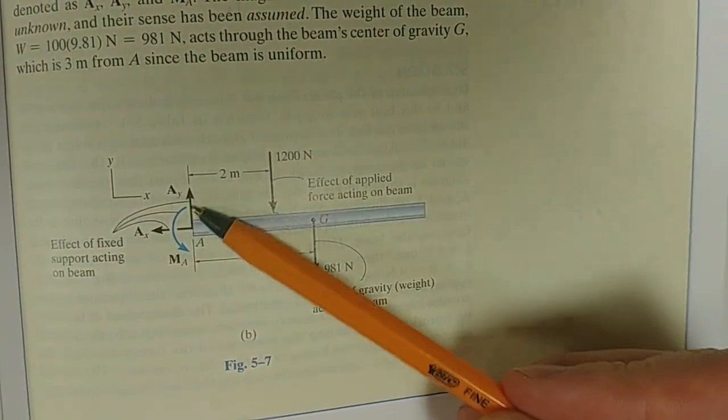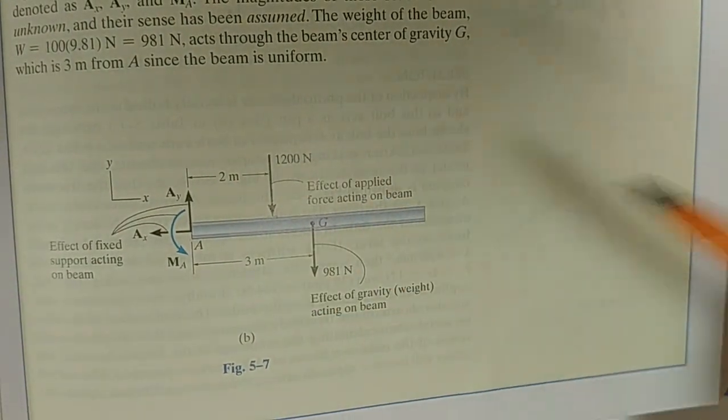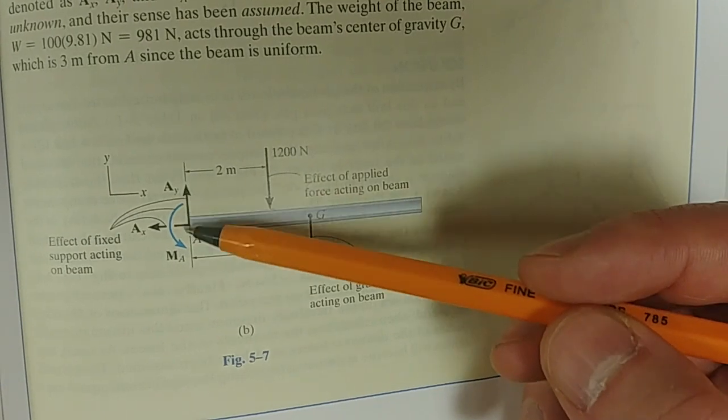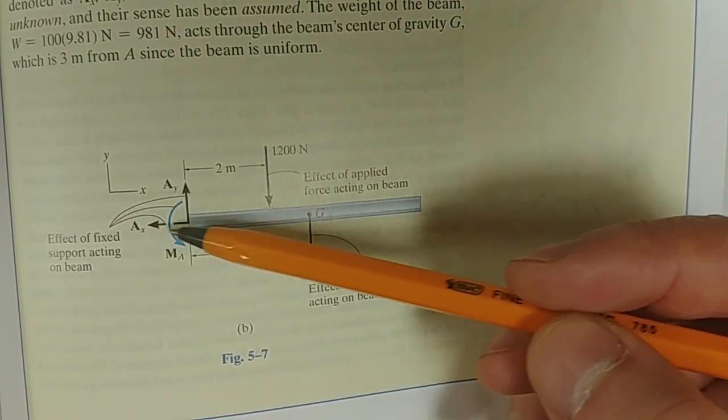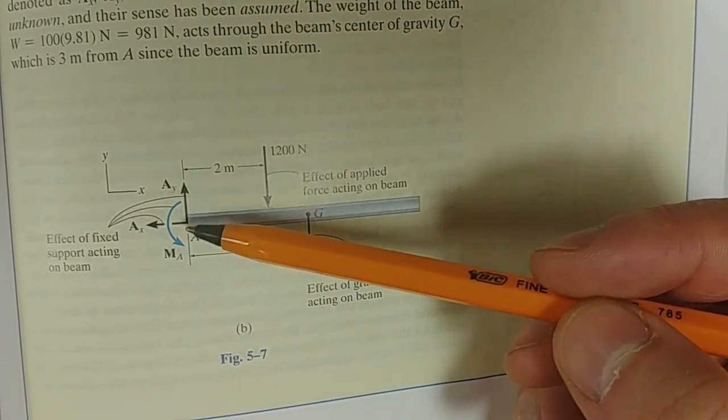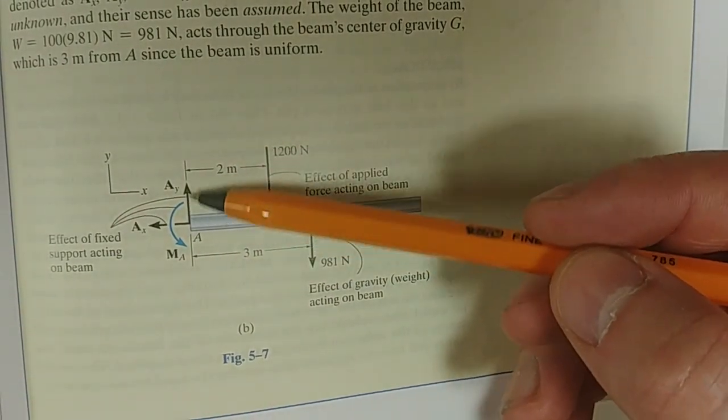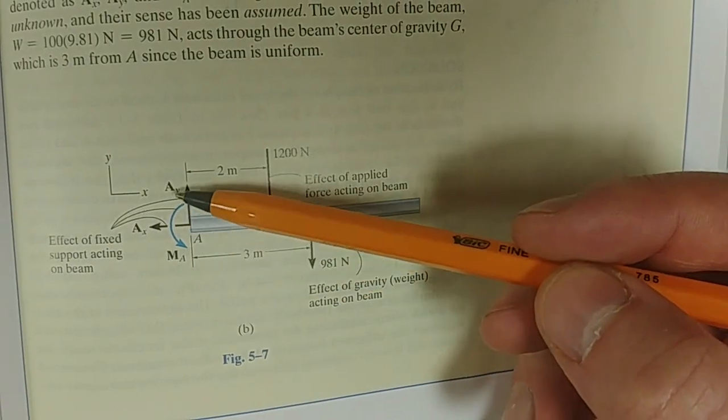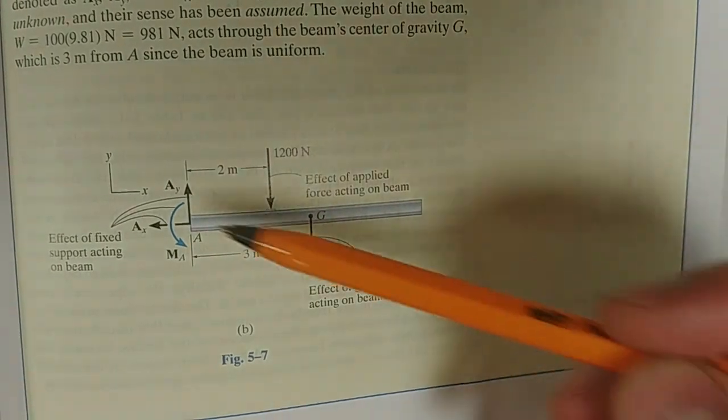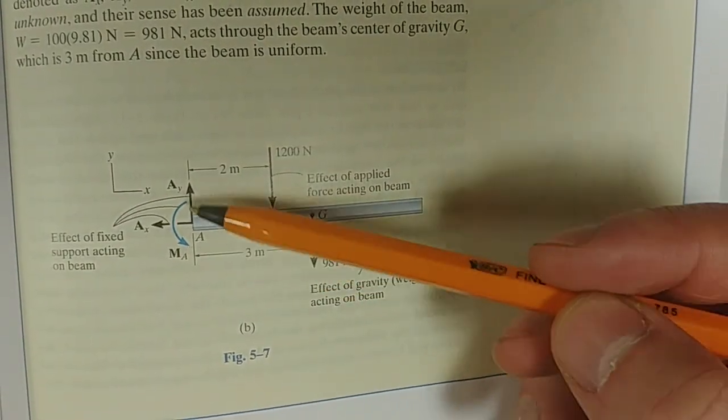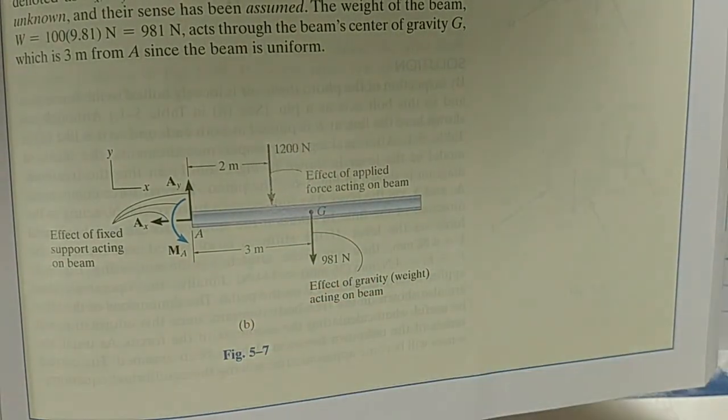When you finally solve for any unknowns using your sum of the forces in the x equal to zero, sum of the moments equal to zero, then if you calculate Ay to be minus whatever, then you know your arrow is in the wrong direction. If you calculate Ax to be minus, then you know your arrow is in the wrong direction. If you calculate your Ay and Ax to be a positive value, then you know I've chosen the right direction. Similarly, for the moment, if I choose Ma counterclockwise and I get a positive number, then I've chosen it in the correct direction. If I get a negative, then it actually means the moment is actually acting in the opposite direction. I hope that's clear.